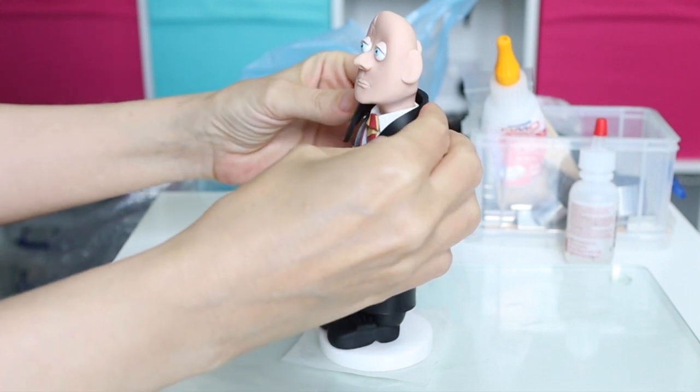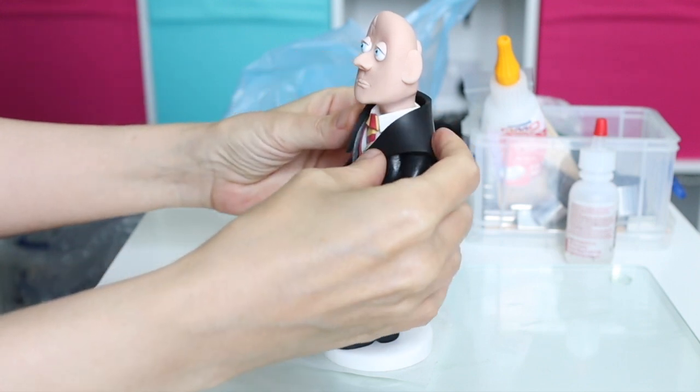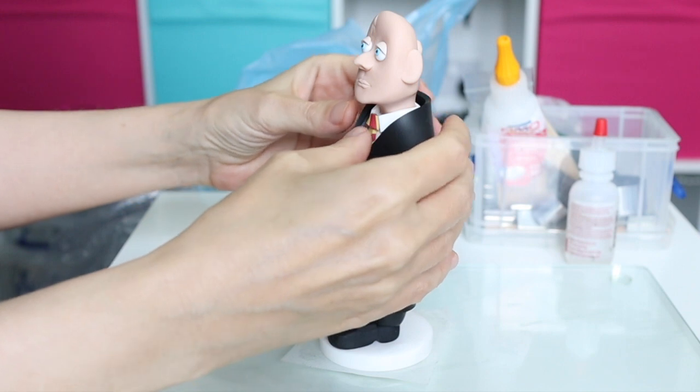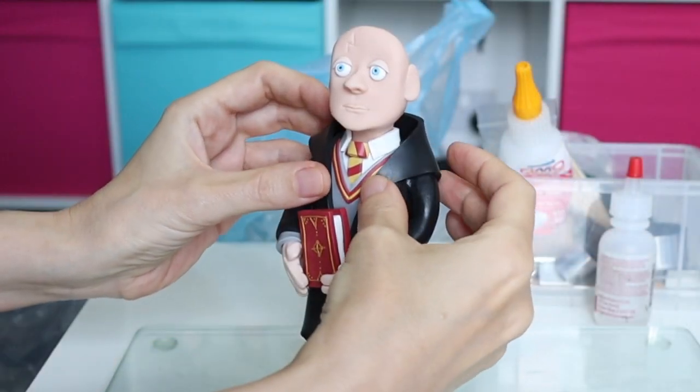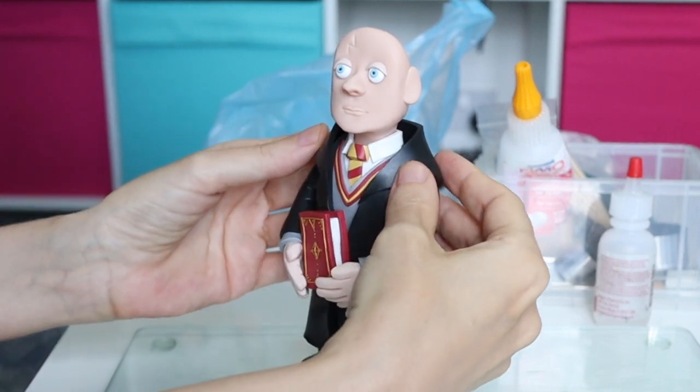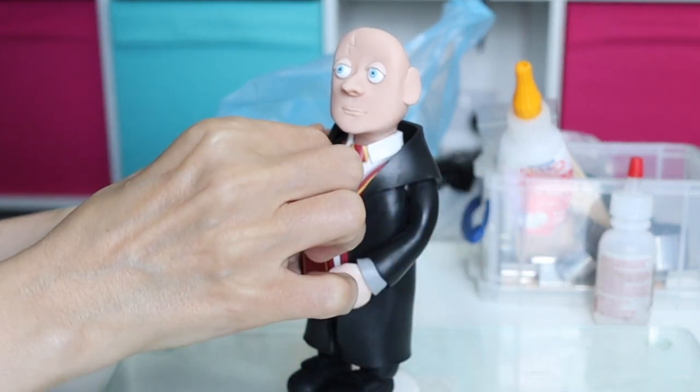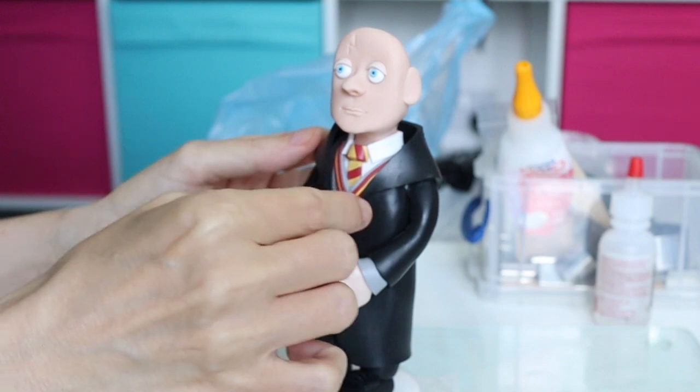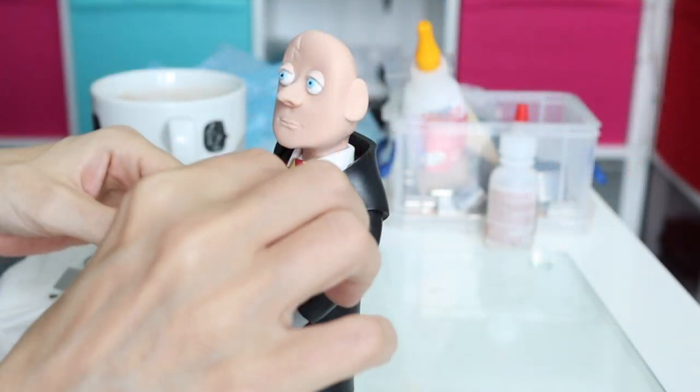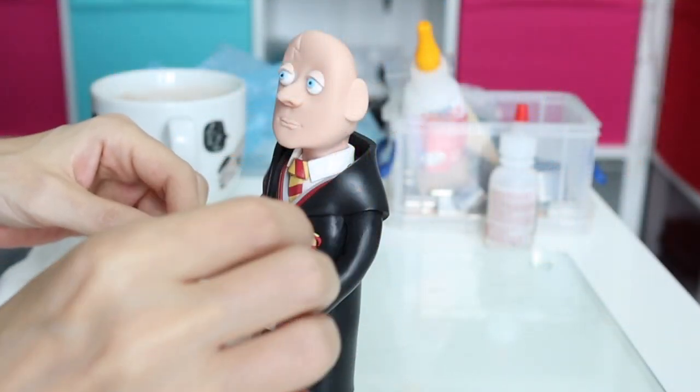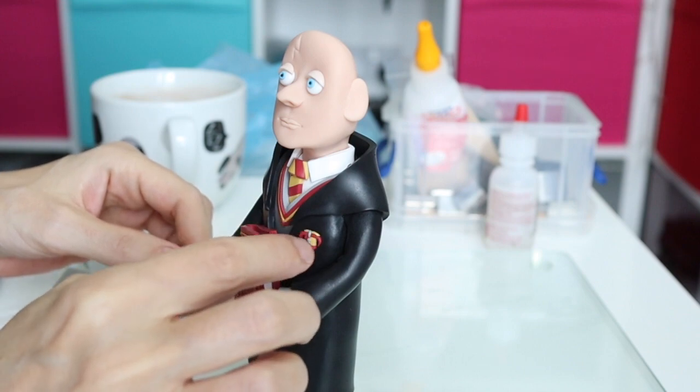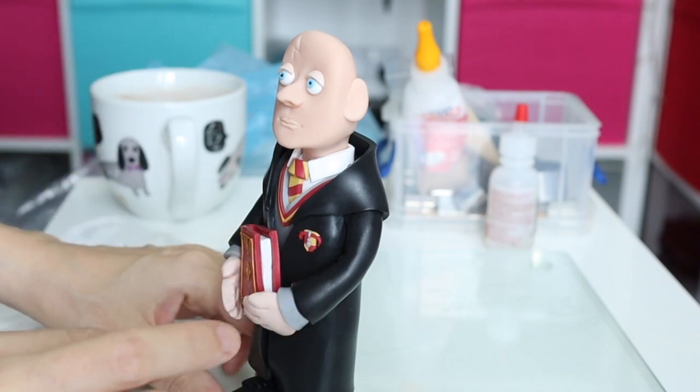To finish off I'm going to add his hood. I'm keeping it as simple as I can because I found in the past that the more detailed the hood is, the messier they look, so it's best to give an impression of a hood. I'll finish off with his little badge, which is a very simplified version of the design because I used coloured polymer clay.